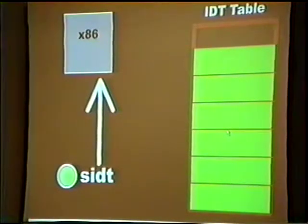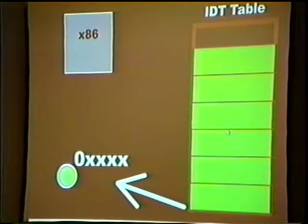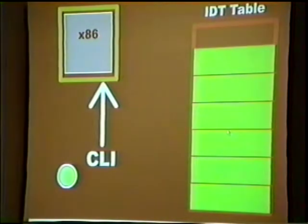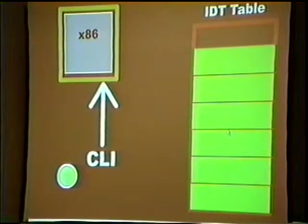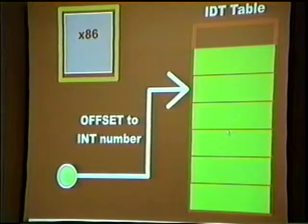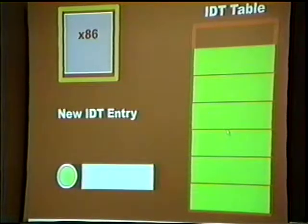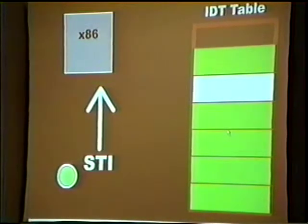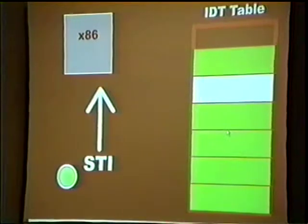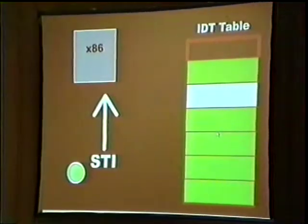I fire SIDT to the processor and it tells me the address of the interrupt descriptor table base. I then disable all interrupts using CLI — a privileged instruction you can't run from user mode — which cuts off all interrupts on the processor while I'm modifying the table. Then I offset to the interrupt number I want to modify and put in my new value pointing to my hook, then STI to release the lock. That is already implemented in the rootkit, although we're not using interrupt hooks for anything subversive — it's just in there if you wanted to work at that level.